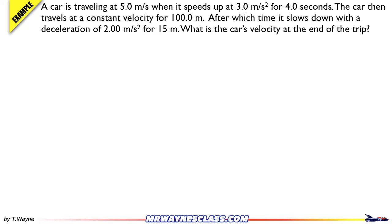This video is the solution to the example problem in kinematics where an object undergoes several accelerations. I refer to this as a segmented problem because of all the different accelerations and segments on the graph. A car is traveling at 5 meters per second when it speeds up at 3 meters per second squared for 4 seconds. The car then travels at a constant velocity for 100 meters, after which it slows down with a deceleration of 2 meters per second squared for 15 meters. What is the car's velocity at the end of the trip?